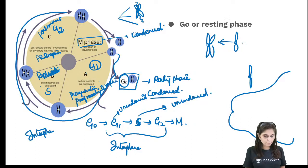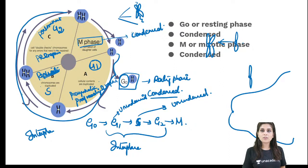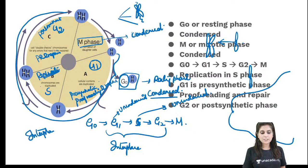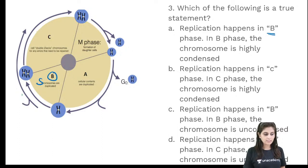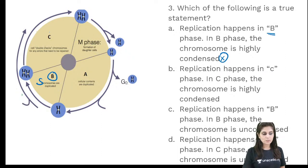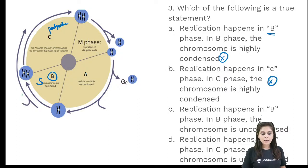So for the question: does replication happen in phase B — yes, that is S phase; and is the chromosome uncondensed — yes. The option stating it is post-synthetic phase where replication does not happen is false. The correct answer is choice C: replication happens in phase B and the chromosome is uncondensed.